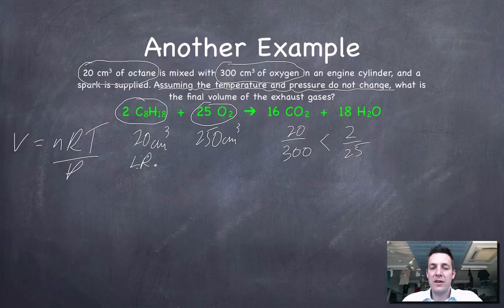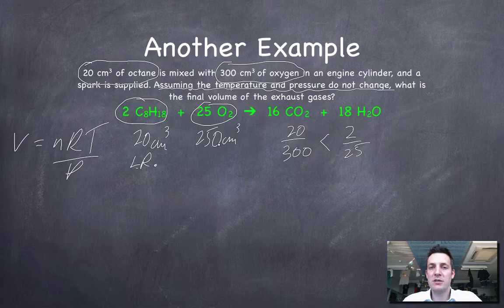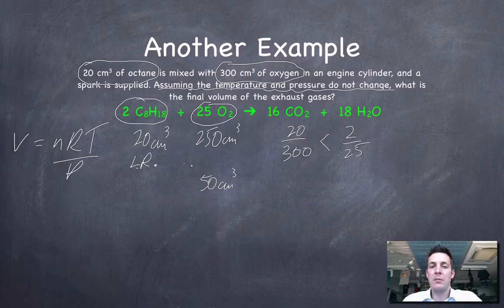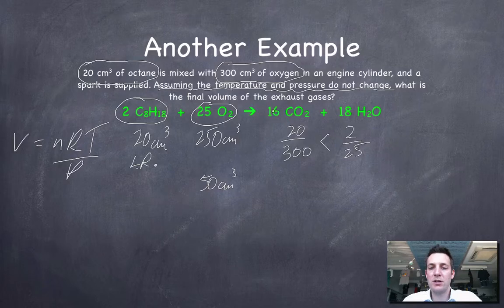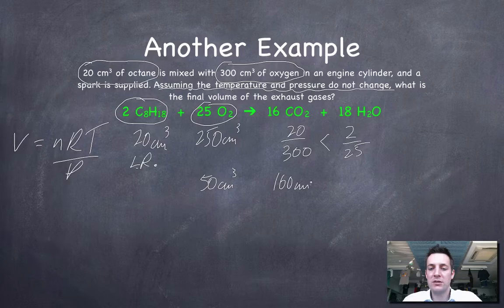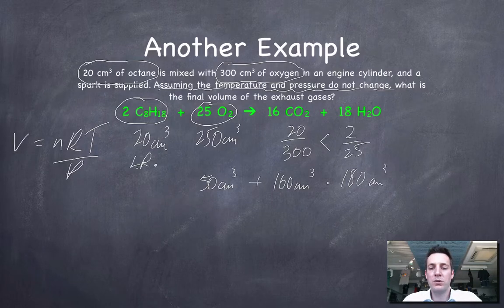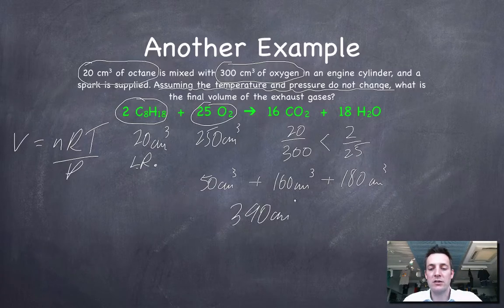Now if the limiting reagent, which is 20 cm³, is going to use 250 cm³ of oxygen, then there are going to be 50 cm³ of it left. But I'm also going to produce 8 times, because I've got 16 moles of CO₂ to every 2 of octane, so 8 times that amount, 160 cm³ of carbon dioxide. And 180 cm³ of water. So the exhaust gases are going to contain all 3 of these gases. And hopefully we can see that that's 390 cm³.